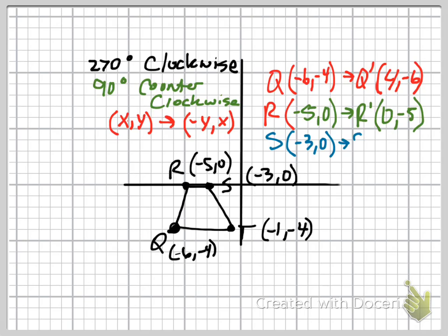Same thing for s. It's negative 3, 0, they switch places, 0, negative 3. And 0 doesn't need to change signs, because 0 is still 0. For t, it was negative 1, negative 4, but it switches, and it now is negative 4, negative 1. But the negative 4 switches to positive 4.